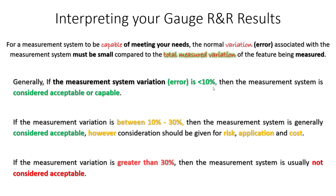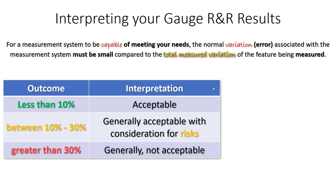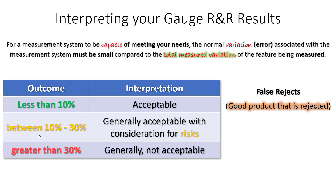There's a gray area in the middle. If your measurement system variation falls between 10% and 30%, the measurement system is generally considered acceptable. However, you should think about the risks, the application, and the costs associated with that measurement system. Here's a table that summarizes how to interpret your results. There are two types of risks to consider. Number one is false rejects — producer's risk — when you build a good part but because of measurement system variation, that part gets rejected and thrown away. Good parts being rejected is essentially a business problem, costing your organization money.